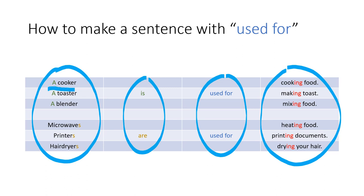For example, we can say, a cooker is used for cooking food. Or we could say, microwaves are used for heating food.